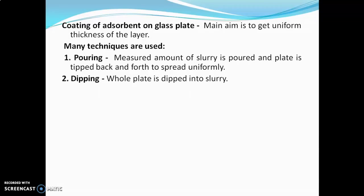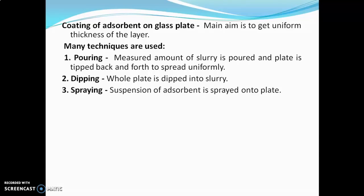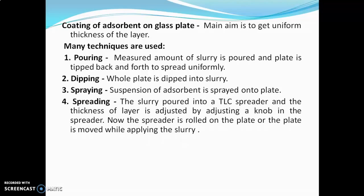The dipping method involves two plates dipped in the slurry back to back; both plates will get coated on one side. Next is the spraying method, where the suspension or slurry of adsorbent is poured in a sprayer and applied on the plate. Next is the spreading method, where the slurry is poured in a TLC spreader and the thickness is adjusted by an adjusting knob. The spreader is rolled on the plate or the plate is moved while applying the slurry. The first three methods do not give a uniform layer, but the spreading method gives a much more uniform layer and is therefore preferred. In the spreading method, the thickness can be adjusted between 0 to 2 mm.